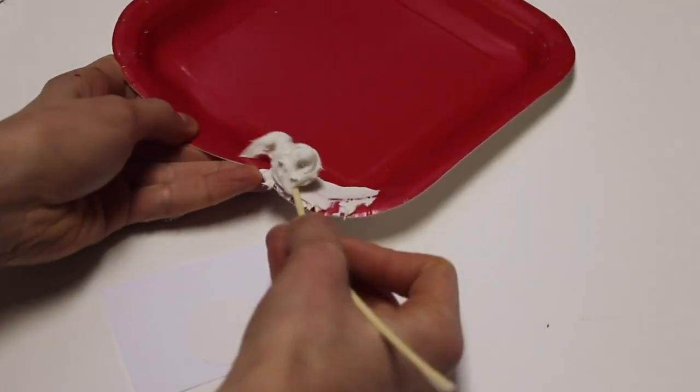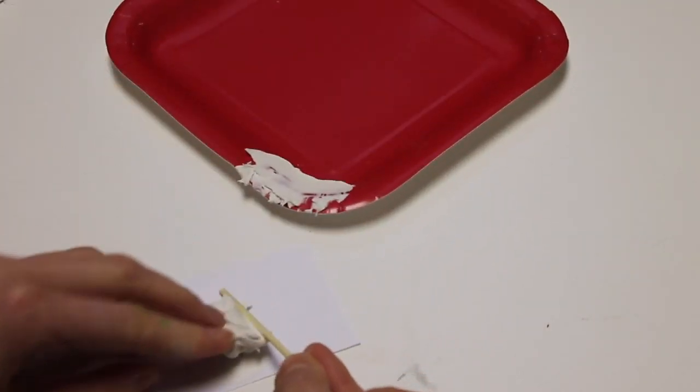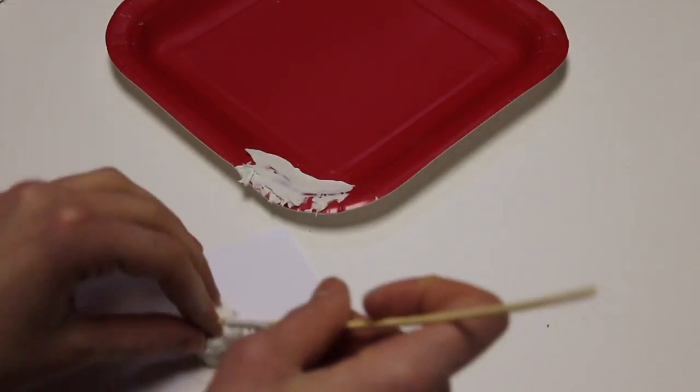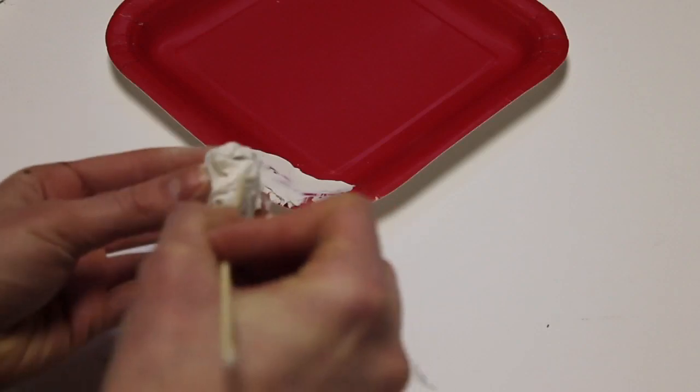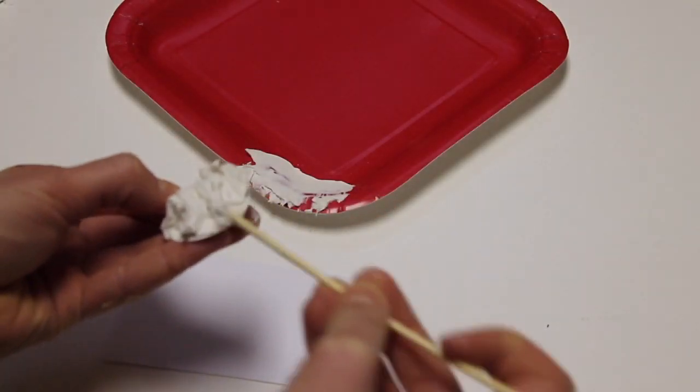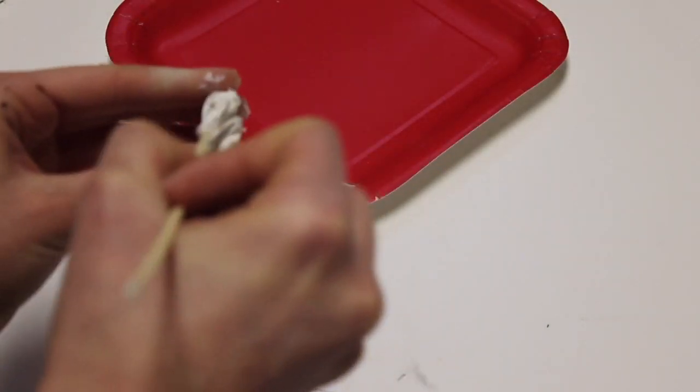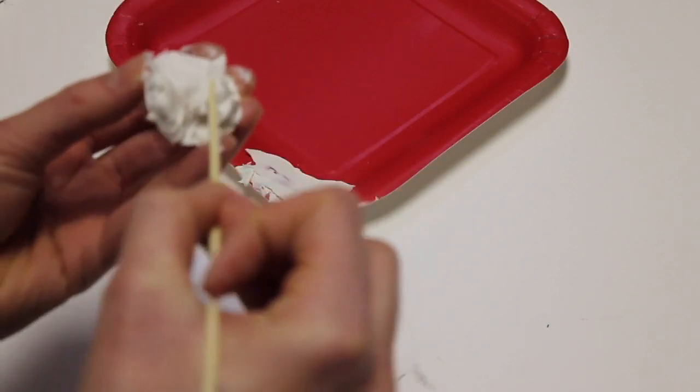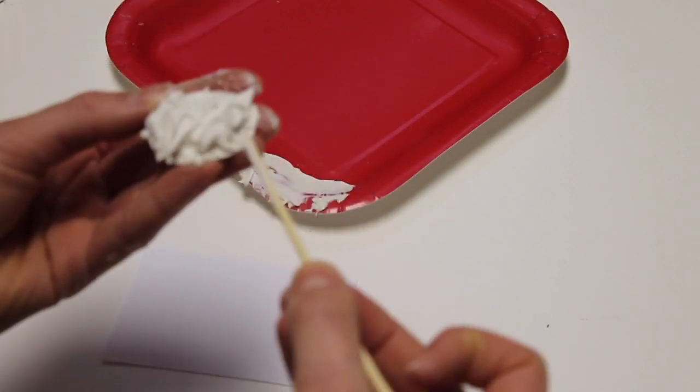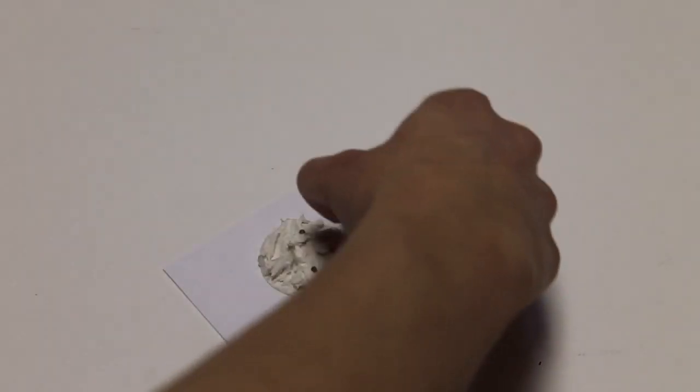And while I'm waiting for that to dry I'm going to take some silicone and put that onto a circle of paper that fits inside the cup and I'm just going to kind of play around with it until it looks kind of like whipped cream.